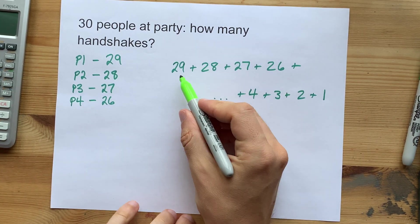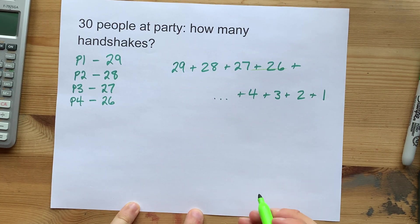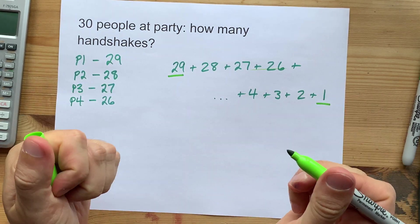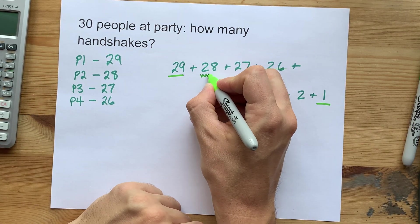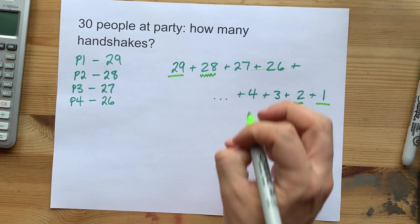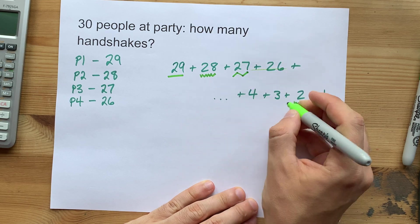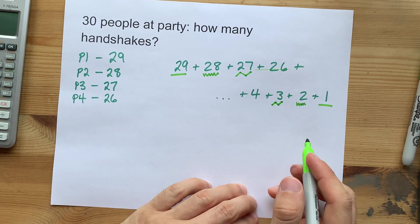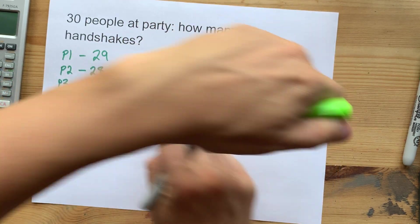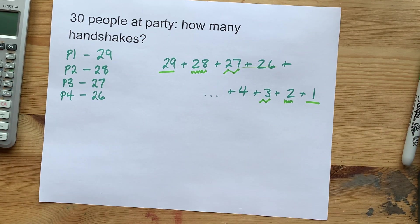First, what you might notice if you were adding up all these numbers together, 29 and 1 add to 30, 28 and 2 add to 30, 27 and 3 add to 30. So you can keep creating pairs that add to 30 as long as you work your way into the middle here.